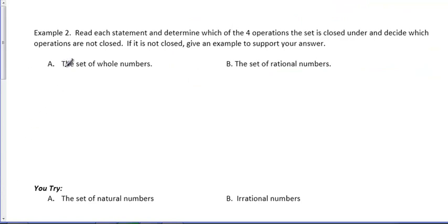Example 2. We're asked to read each statement and determine which of the four operations is closed and which it's not closed for. We're going to make sure we include our support. First, the set of whole numbers for addition. Again, we just talked about this, but just to do more. If I said 3 plus 10, that's 13. Those are all whole numbers. 6 plus 6 is 12. That's a whole number. 9 plus 0 is 9. That's a whole number. So we would say for addition, it's closed.